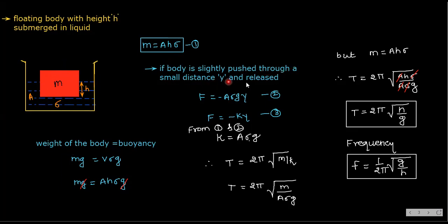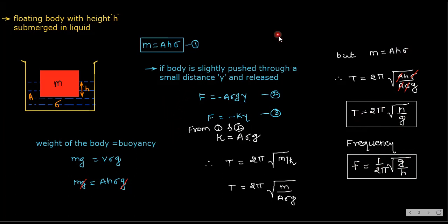If the body is slightly pushed down through a small distance y and released, it will oscillate. Due to that push, restoring force F = −A·ρ·g·y. Comparing with F = −ky, k = A·ρ·g. Using T = 2π √(m/k), substituting k = A·ρ·g and m = A·h·ρ, the A and ρ cancel, giving T = 2π √(h/g). For frequency: f = (1/2π) √(g/h). Note this down.